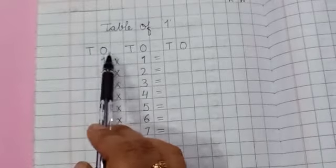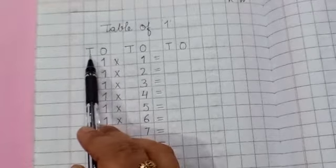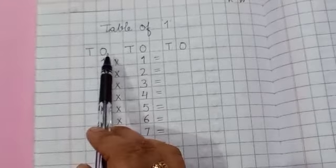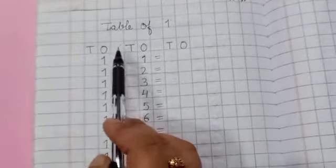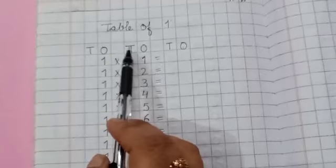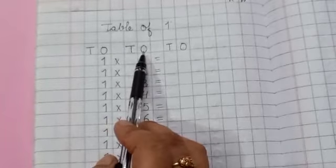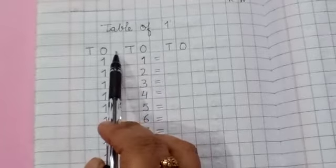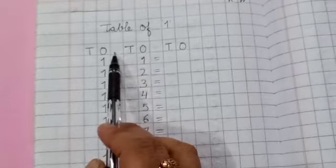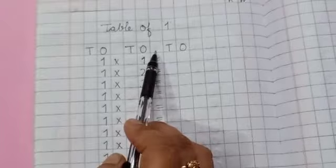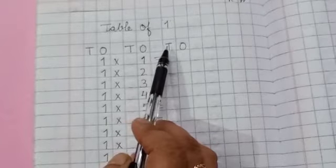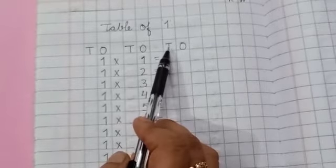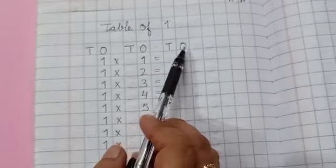Okay, then write T-O. Here T stands for tens and O stands for ones. Again leave one box. T-O. Then again leave one box. You can also put one small dot. Then again write T-O. T stands for tens and O stands for ones.